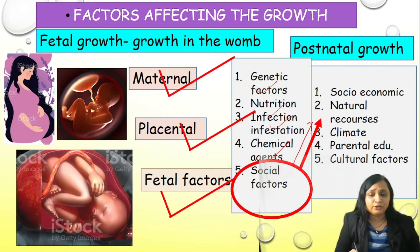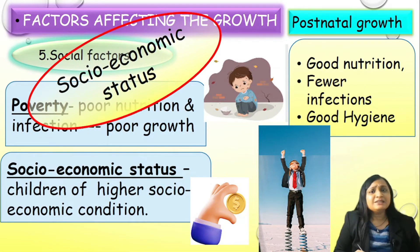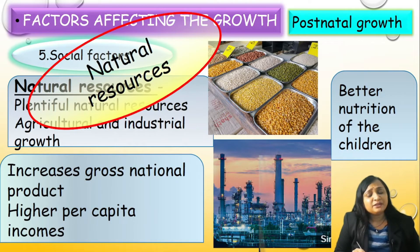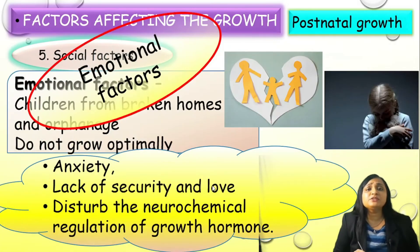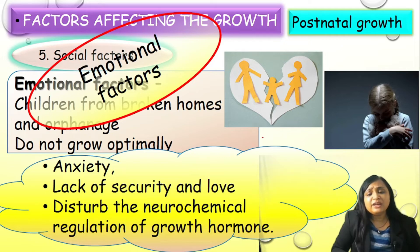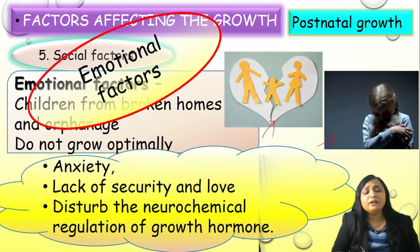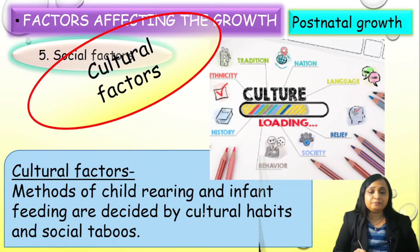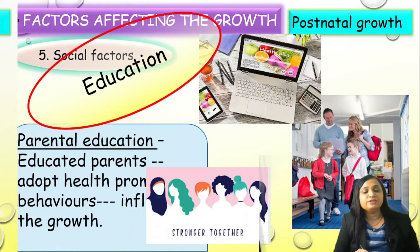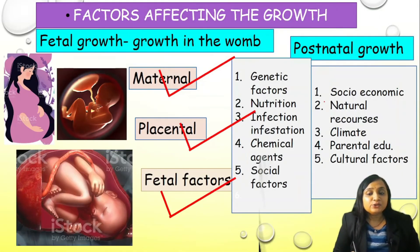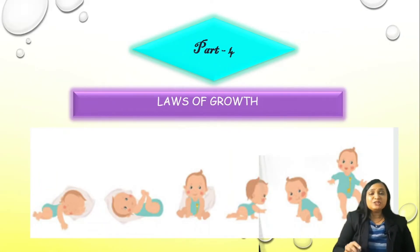Good socioeconomic status means good growth of the baby. Good natural resources will lead to better nutrition of children and better growth. Good climatic conditions favor growth; poor climatic conditions give more chances for infection and infestation, and lower chances of growth. Emotional factors matter too — if the child is coming from a broken family or orphanage, there will be a lack of security and love, more anxiety, growth hormone secretion will be disturbed, and there will be growth failure. Cultural habits, social taboos, and good education of the parents also play an important role in the growth of the child.